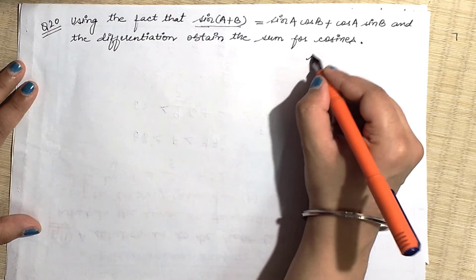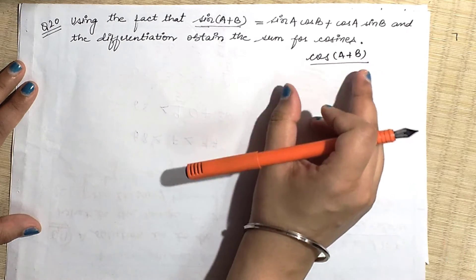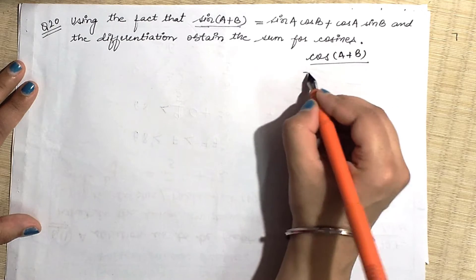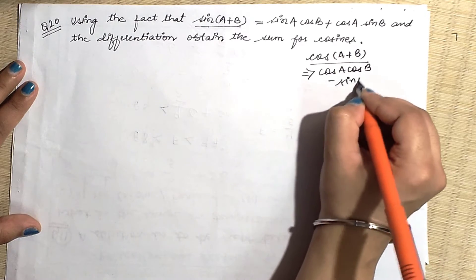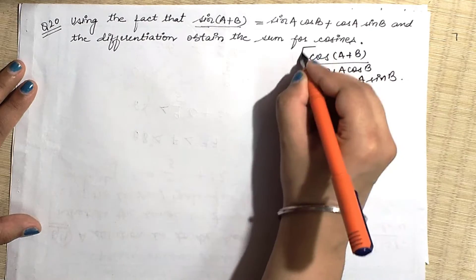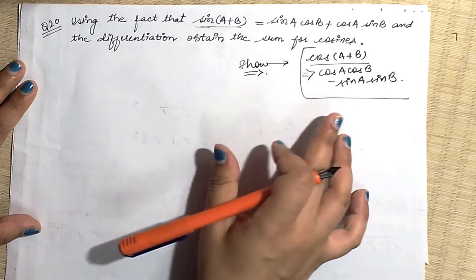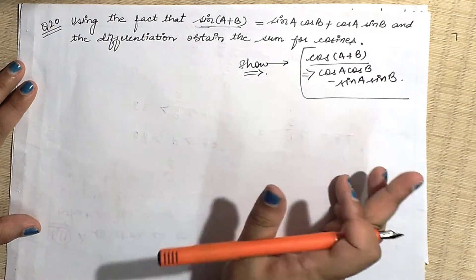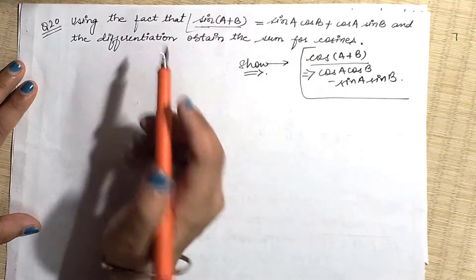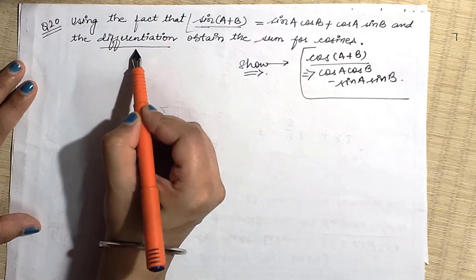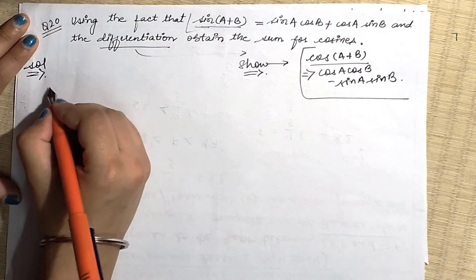Here you need to prove the value of cos(a+b). Just as the formula for cos(a+b) is: cos(a+b) = cosA cosB − sinA sinB. You have to show this value. The question says to use this equation and differentiation to arrive at this value. It is a very interesting question — let's go through it step by step.